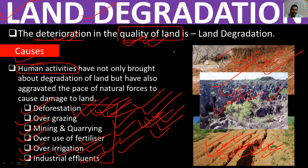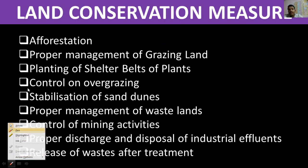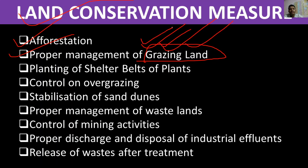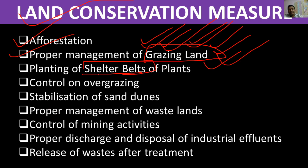On the next slide, we will look at conservation measures for land degradation — how we can prevent land from degrading. The first measure is afforestation — plant trees. Second is proper management of grasslands and grazing lands, so that animals do not finish all the grass at once, making the land loose. Third is planting of shelter belts.